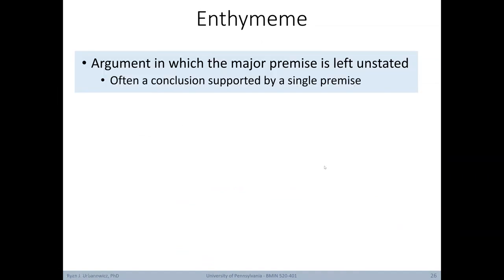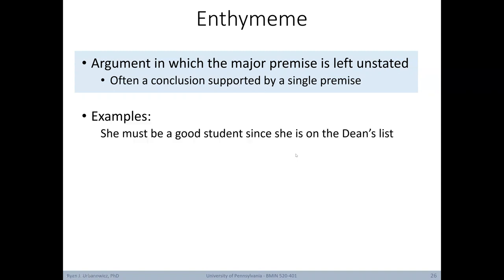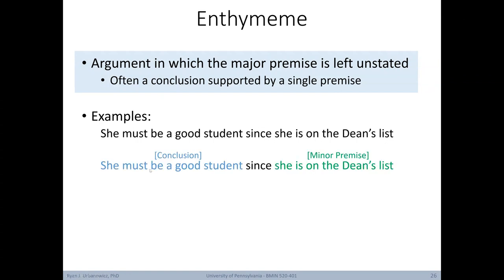It's useful to define an enthymeme: an argument in which the major premise is left unstated. Often it's a conclusion supported by a single premise in natural language. Example: 'She must be a good student since she's on the dean's list.' The conclusion is 'she must be a good student,' but we only have one premise: 'she's on the dean's list.' There is an implied major premise: 'all good students are on the dean's list.'